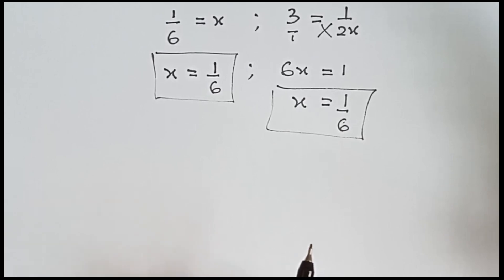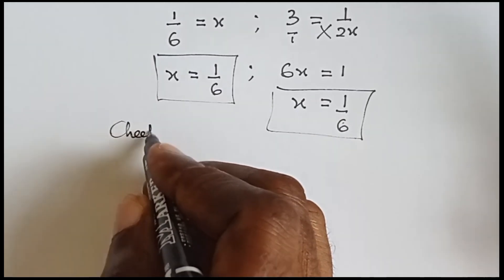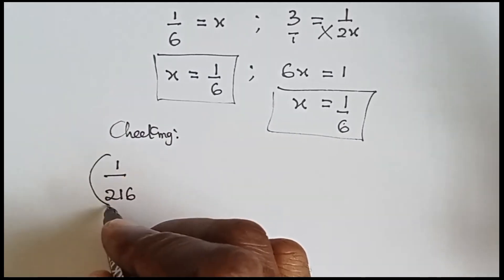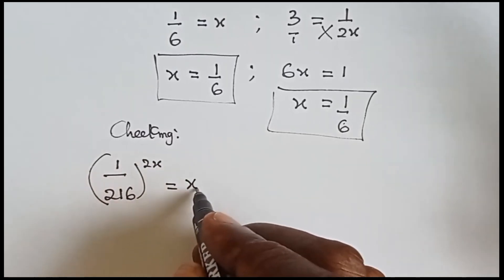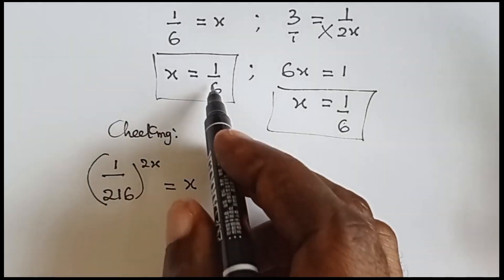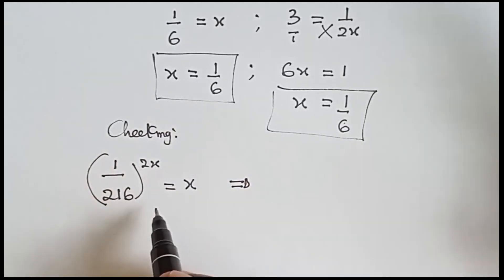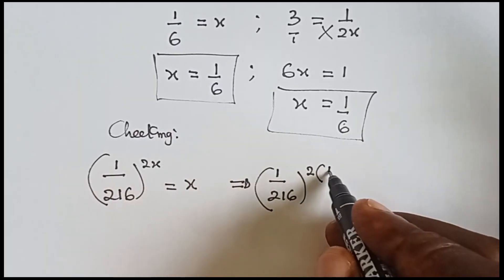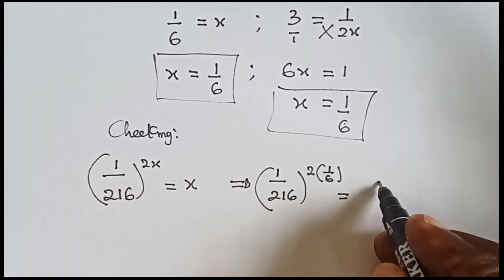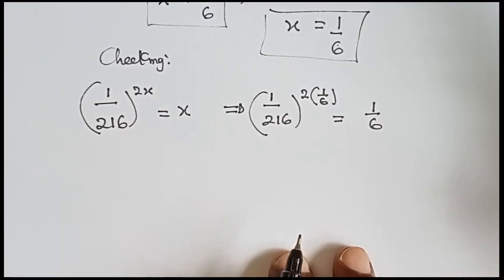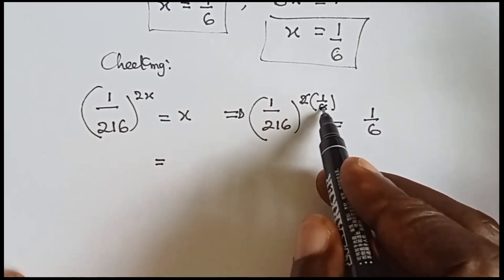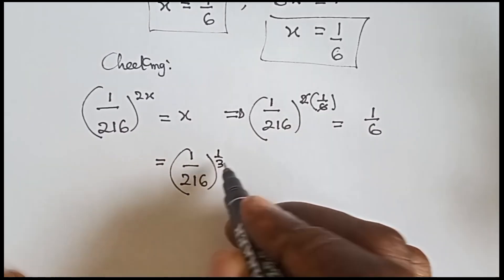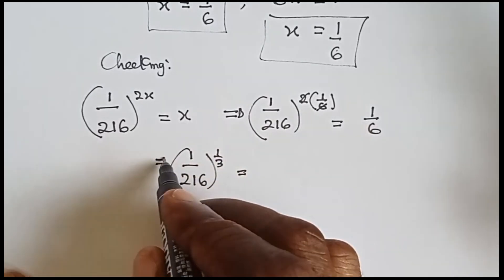Let's quickly check if our answer is correct. We have 1 over 216 raised to the power 2x equals to x. Now that we have x equals to 1 over 6, let's substitute: 1 over 216 raised to the power 2 multiplied by 1 over 6 should equal 1 over 6. We can simplify 2 over 6 to 1 over 3, so we have 1 over 216 raised to the power 1 over 3, equals to 1 over 6.